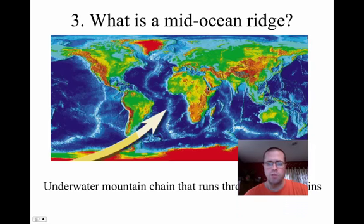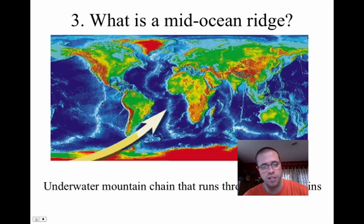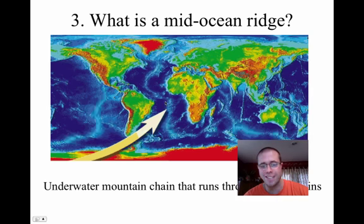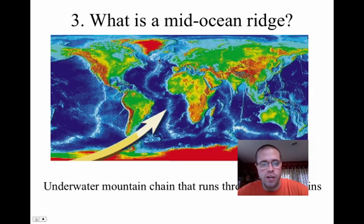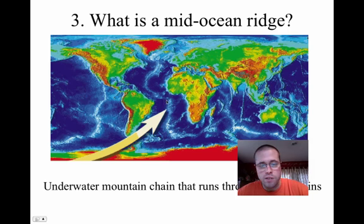Number three: what's the mid-ocean ridge? It's an underwater mountain chain that runs through ocean basins. Mid-ocean ridges are spreading centers — they are divergent boundaries, diverging to move apart. The most well-known is the Mid-Atlantic Ridge, running down the middle of the Atlantic Ocean. You can see the United States here and the Atlantic Ocean here. This is the most active spreading region in the world.